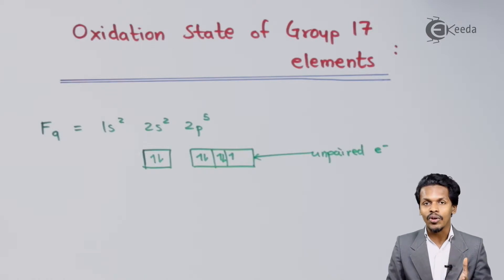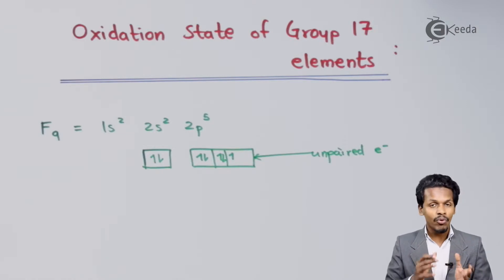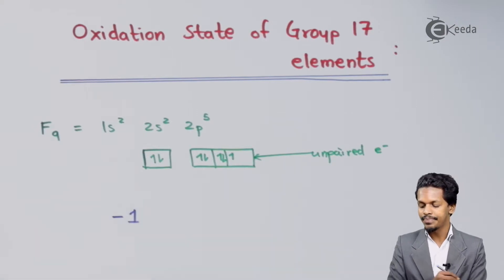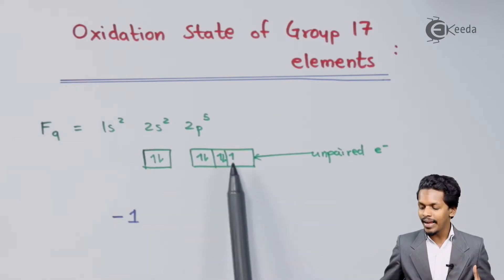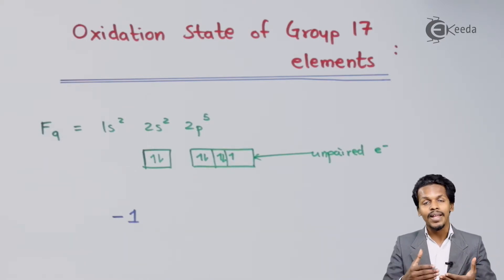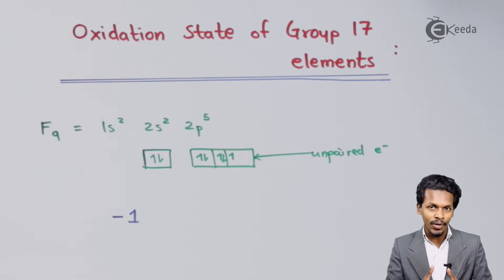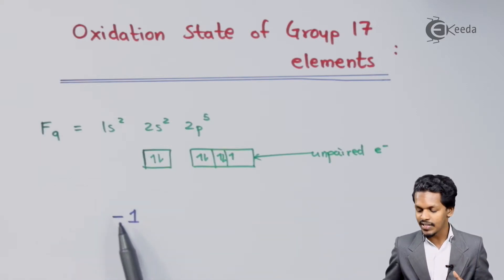Fluorine only needs 1 electron, and because of this need for 1 electron, Fluorine can act like a normal gas. Therefore it is very much in need of 1 electron. That is the reason that the oxidation state of Fluorine is always found to be minus 1.